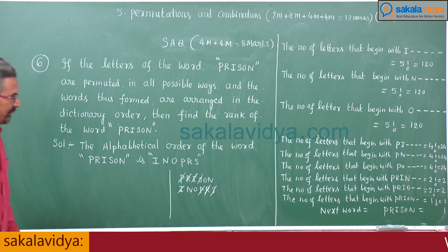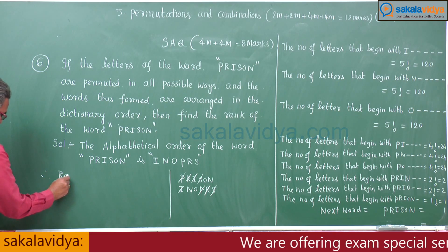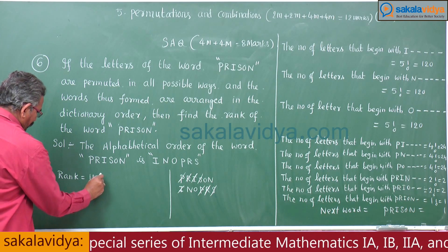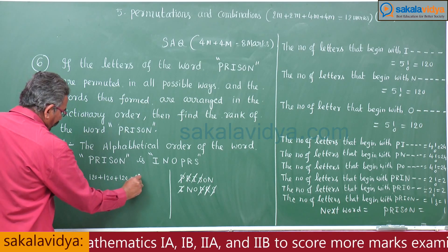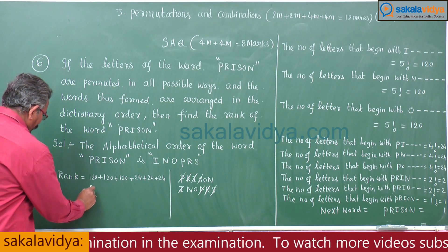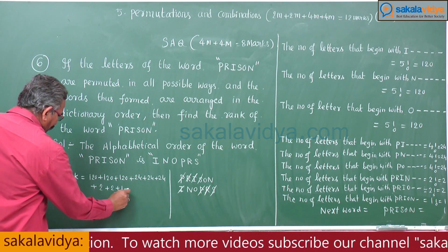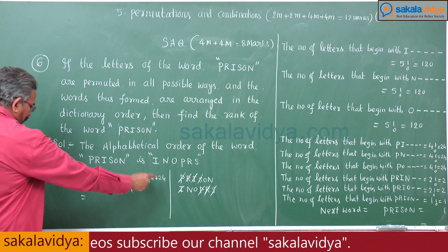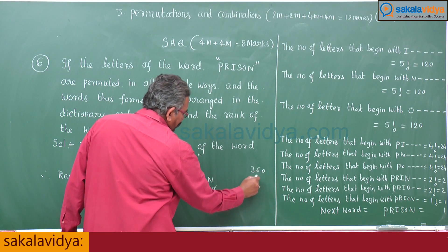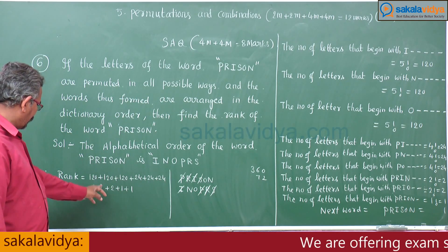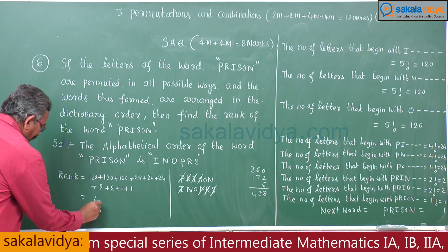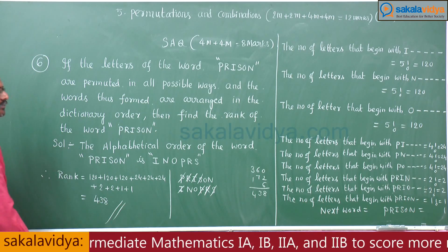Therefore, the rank equals 120 + 120 + 120 + 24 + 24 + 24 + 2 + 2 + 1 + 1, which gives 360 + 72 + 6 = 438. So the rank of the word PRISON is 438.